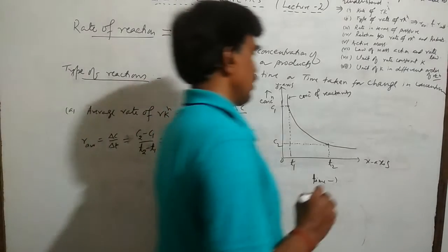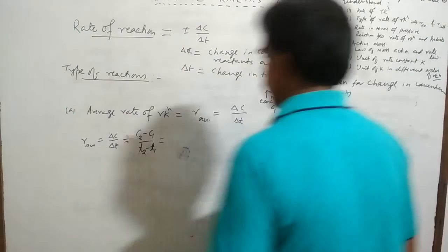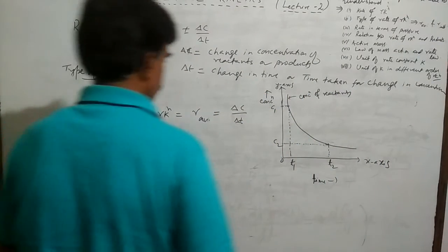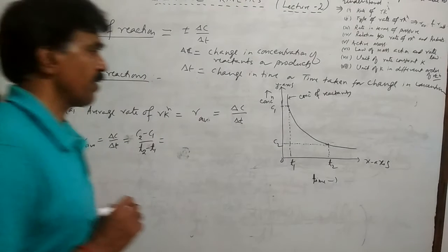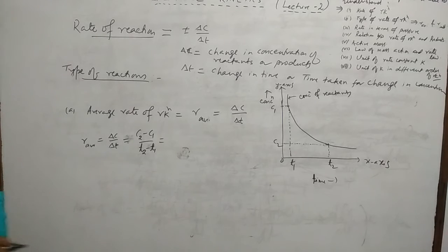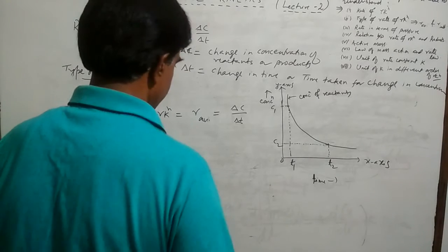For the graph for products, as you know, if the time increases, concentration of the product increases. So the graph appears like this.